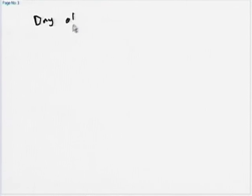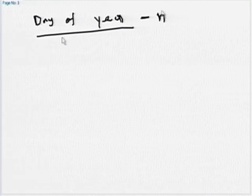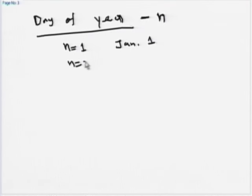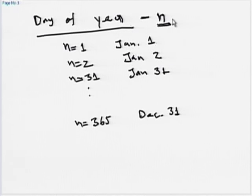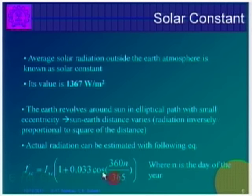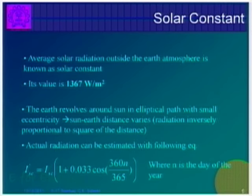ISC′ is what you calculate for any given day. In solar radiation calculations, we talk about the day of the year represented by the symbol n. When n = 1 it means January 1, n = 2 means January 2, n = 31 means January 31, and n = 365 means December 31. Once you put the value of n you can solve the equation to find out the solar radiation outside the earth's atmosphere. Remember, I am talking about outside the earth's atmosphere only — it is called the extraterrestrial solar radiation.